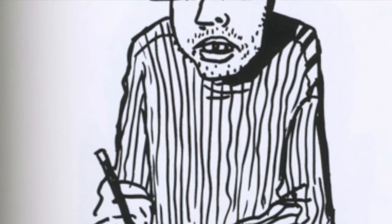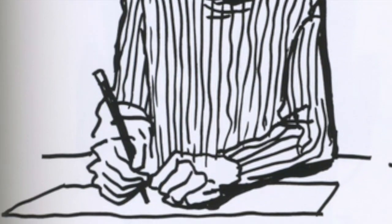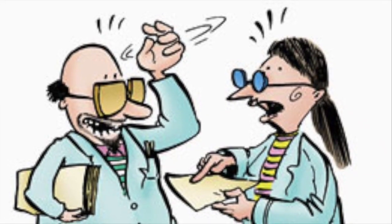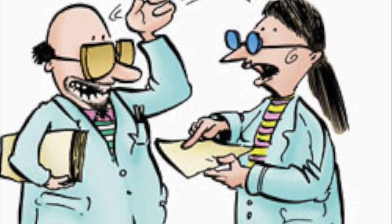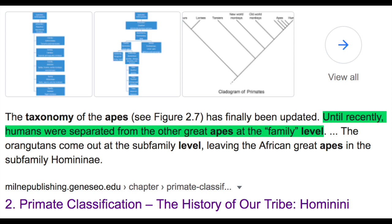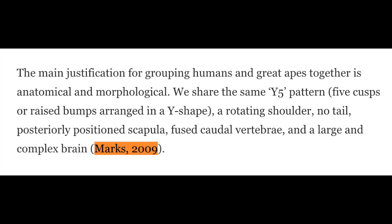Evolutionists are always trying to make sure that everything is related and wanted to classify man as an ape. So they came up with a way to linguistically smuggle mankind into the ape family. A scientist clipped together five physical features that humans share in common with apes to swindle man into that family. Basically, they played a language game.